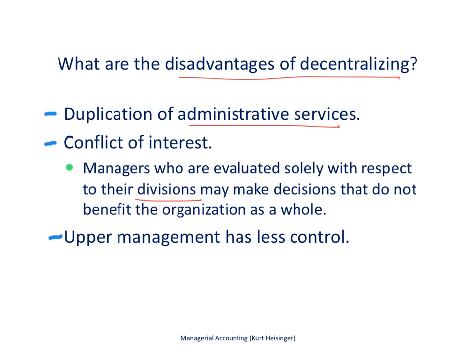Upper management also has less control by the very nature of decentralizing — decision-making authority is taken away from upper management. While they can focus more on strategic planning, it gives control to managers over subunits and divisions. Upper management must trust the employees and managers they've hired to run these different divisions.